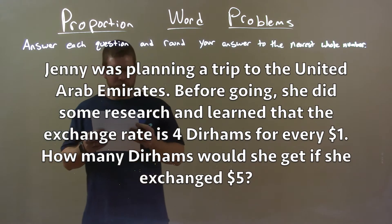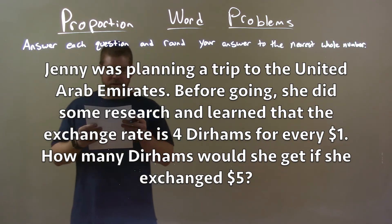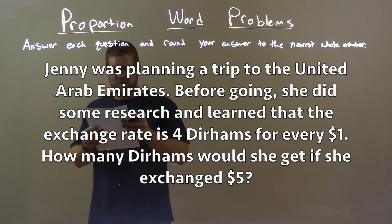Jenny was planning a trip to the United Arab Emirates. Before going, she did some research and learned that the exchange rate is 4 dirhams for every $1. How many dirhams would she get if she exchanged $5?